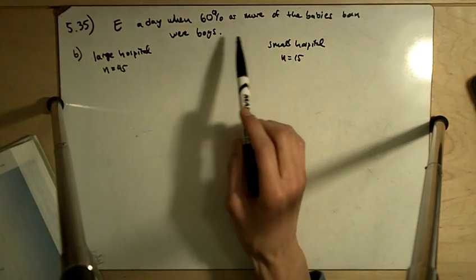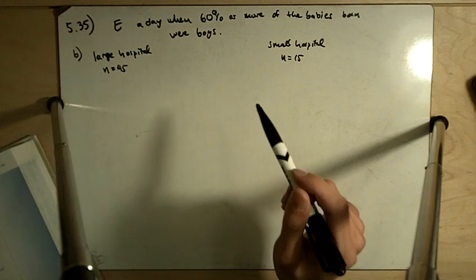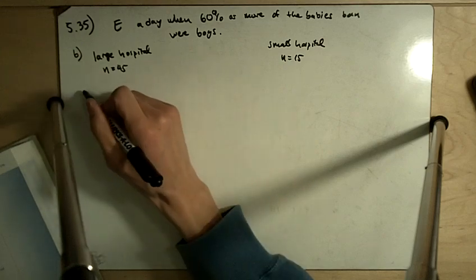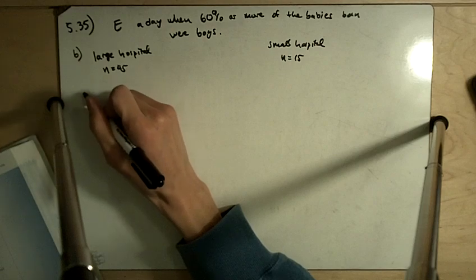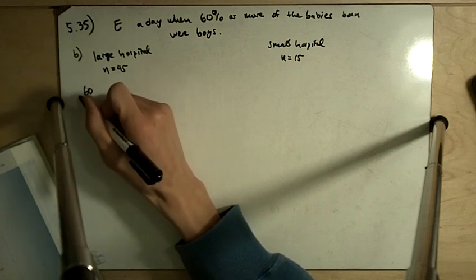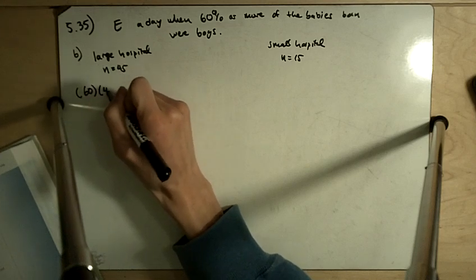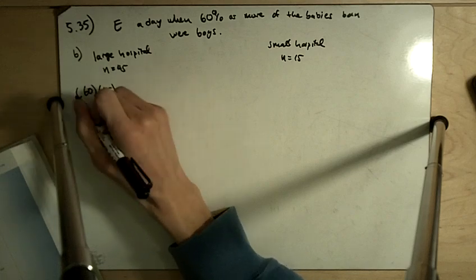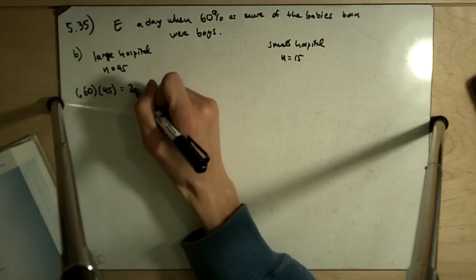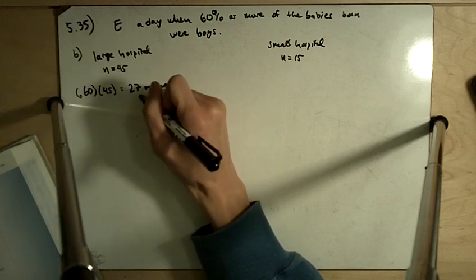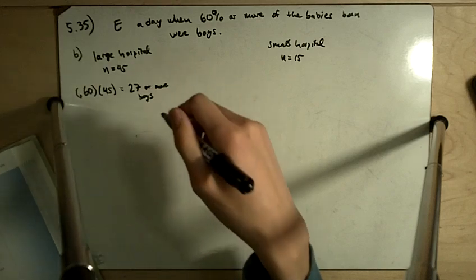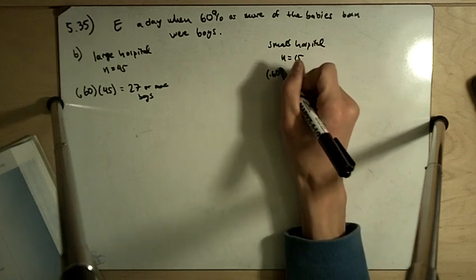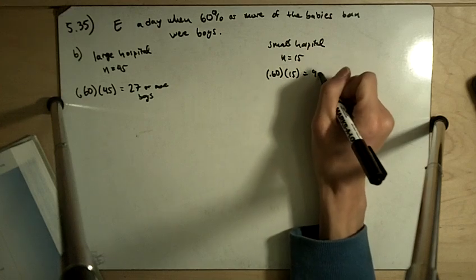In this case, the event E is an unusual event where more than 60% of the babies were boys. So in a large hospital with 45 babies being born, we basically need to have for 60% of the babies to be boys, that equals 0.6 times 45. So that means 27 or more of the babies are boys. So that means out of the 45, 27 or more need to be boys. And over here, 60% of 15, that means 9 or more boys.